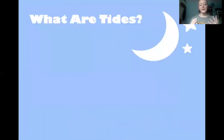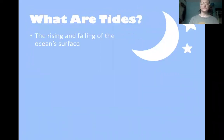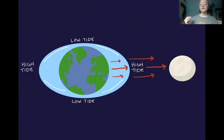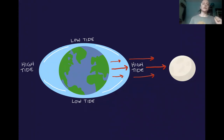So first of all, what are tides? Tides are the rising and falling of the ocean surface. Believe it or not, tides are caused by the moon. The moon's gravitational pull pulls the water on earth towards the moon. The sides of the earth closest and farthest from the moon experience high tide, whereas the sides perpendicular to the moon experience low tide. As the moon orbits the earth, it pulls the water with it, which is how different places on earth experience tides at different times of the day, and that's how the high tide and the low tide change.